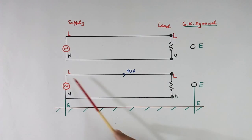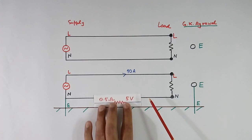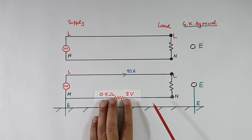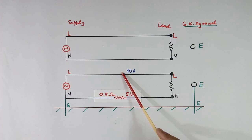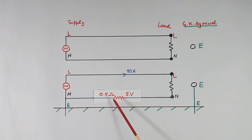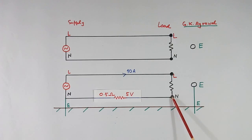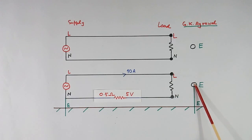These wires are very long and will have some resistance. Suppose this resistance is 0.5 ohm and 10 ampere current is flowing — so here a 5 volt drop will be there. So if this point is 0 volt, the other point will not be 0 volt — it will be 5 volt. So the voltage of neutral and earth will not be the same.